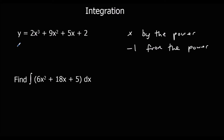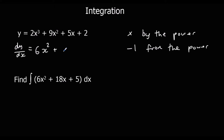So let's differentiate this. dy/dx is going to be: we times by the power — 3 times 2 is 6 — and take 1 off the power, so 3 goes down to 2. We times by the power: 2 times 9 is 18. We take 1 off the power: 2 minus 1 is 1. We don't have to write the power of 1.